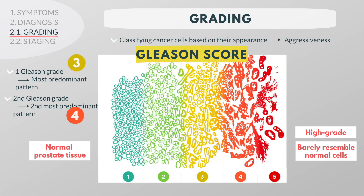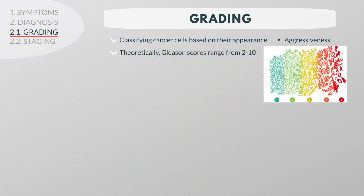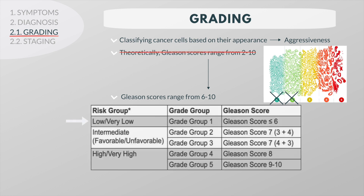For example, three and four. The two grades will then be added together to determine the Gleason score. Theoretically, Gleason scores range from 2 to 10, but the Gleason grades 1 and 2 have been eliminated. So as a result, Gleason scores will range from 6 to 10, with 6 being the lowest grade cancer, 7 is intermediate grade, and a score of 8 to 10 is a high grade cancer.